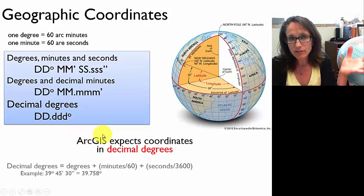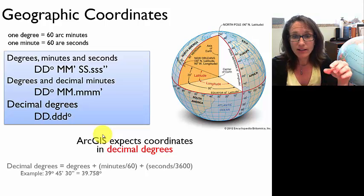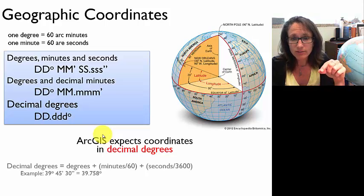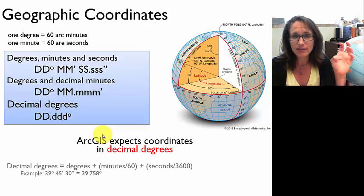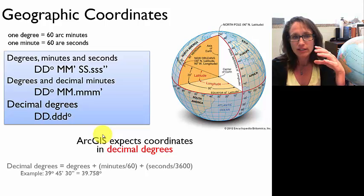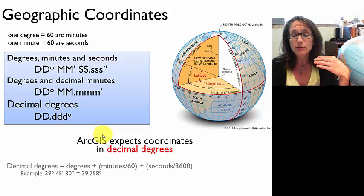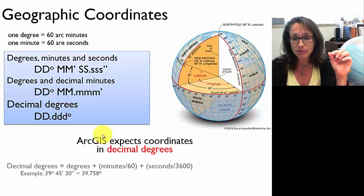If you're going to input coordinates into ArcGIS from a text file and they are latitude and longitude, they have to be in decimal degrees, because there's no way to tell ArcGIS which values are minutes and which are seconds. So if you're taking a text file with geographic coordinates and importing it to ArcGIS, it must be in decimal degrees.